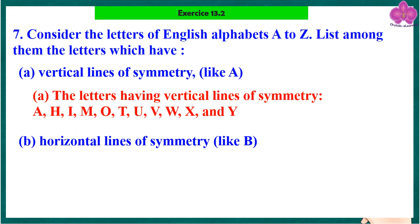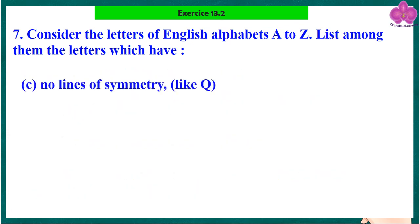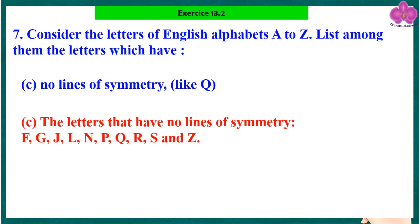The letters having horizontal lines of symmetry, like B, are: B, C, D, E, H, I, K, O, and X. The letters having no lines of symmetry include: L, N, P, Q, R, S, and Z.